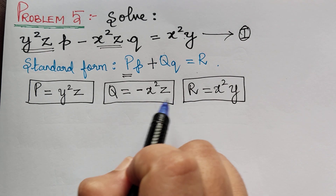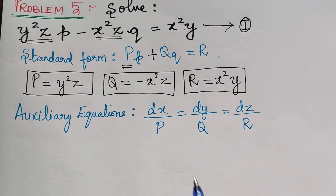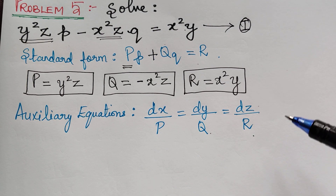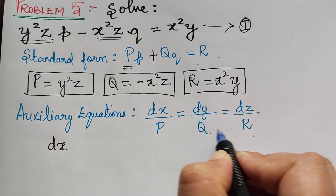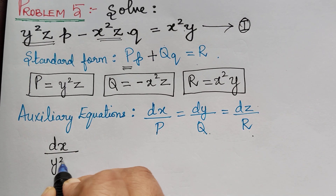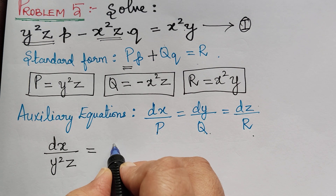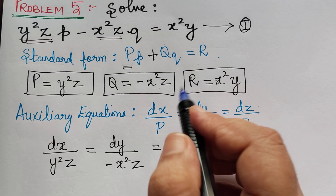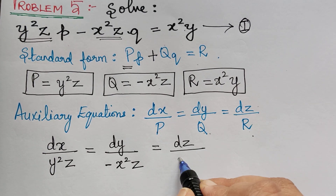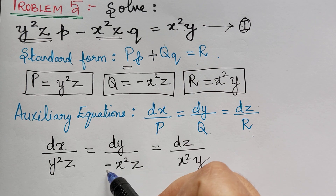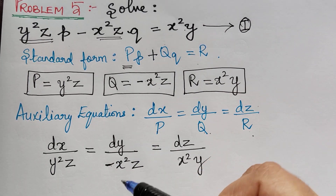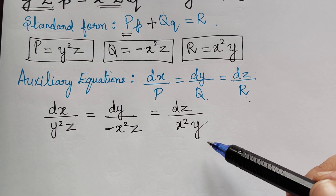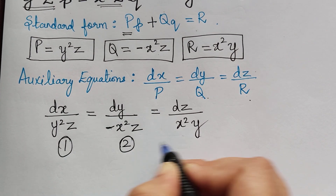The next step is to write the auxiliary equations, given by dx/P = dy/Q = dz/R. Substituting P, Q, and R, we get dx/(y²z) = dy/(−x²z) = dz/(x²y). Do not forget to put the negative sign — it is very important. We will label these as equations 1, 2, and 3.